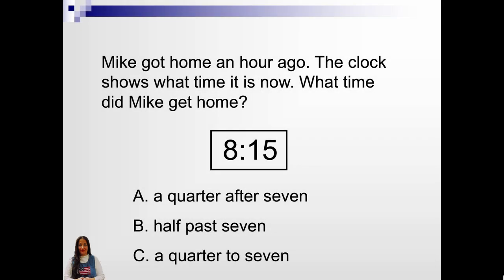Mike got home an hour ago. The clock shows what time it is now. What time did Mike get home? He got home an hour ago. A. A quarter after 7. B. Half past 7. Or C. A quarter to 7. A. A quarter after 7.